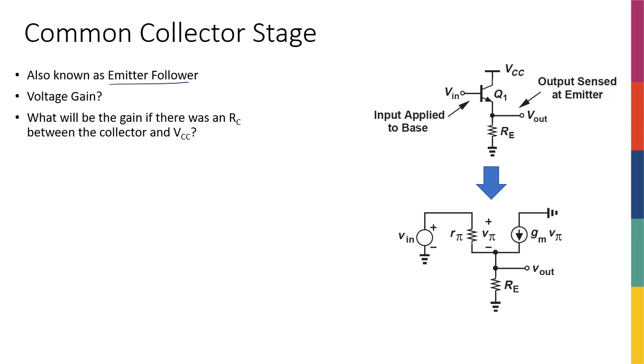The first thing we do is to calculate the voltage gain, similar to every other stage or every other topology. I draw the small signal model, and I try to write KCLs and KVLs to find the relationship between Vout and Vin.